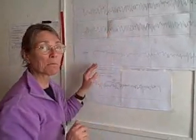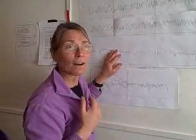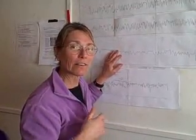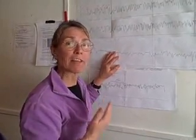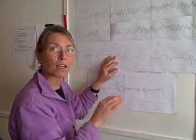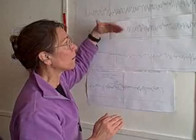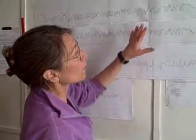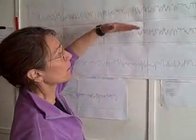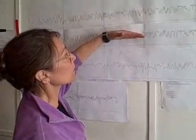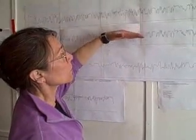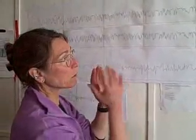And this matching, some people call it wiggle matching. More formally, we like to think of it as what we call event stratigraphy, where we're matching certain climatological events from one core to another. One of the reasons that we take two adjacent boreholes is to actually make sure we get the complete sequence.